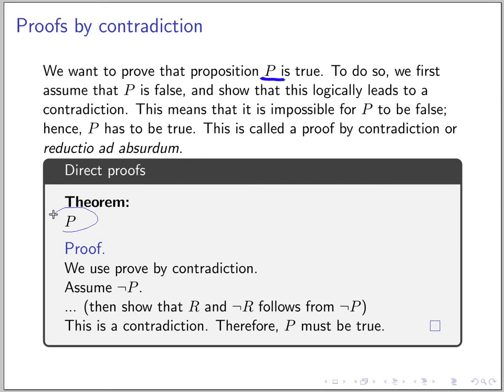To prove P we assume not P and from that we show that there's some contradictions like in this case you have R and not R somehow and this follows from not P. If this is a contradiction then it means that it's impossible for P to be false and P has to be true.